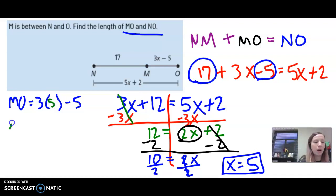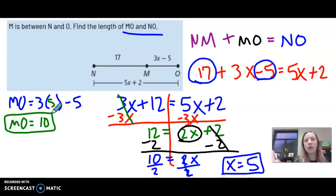So to find MO, 3 times 5 is 15. 15 minus 5 is 10. We know that MO is 10 units. The length of segment MO is 10 units.